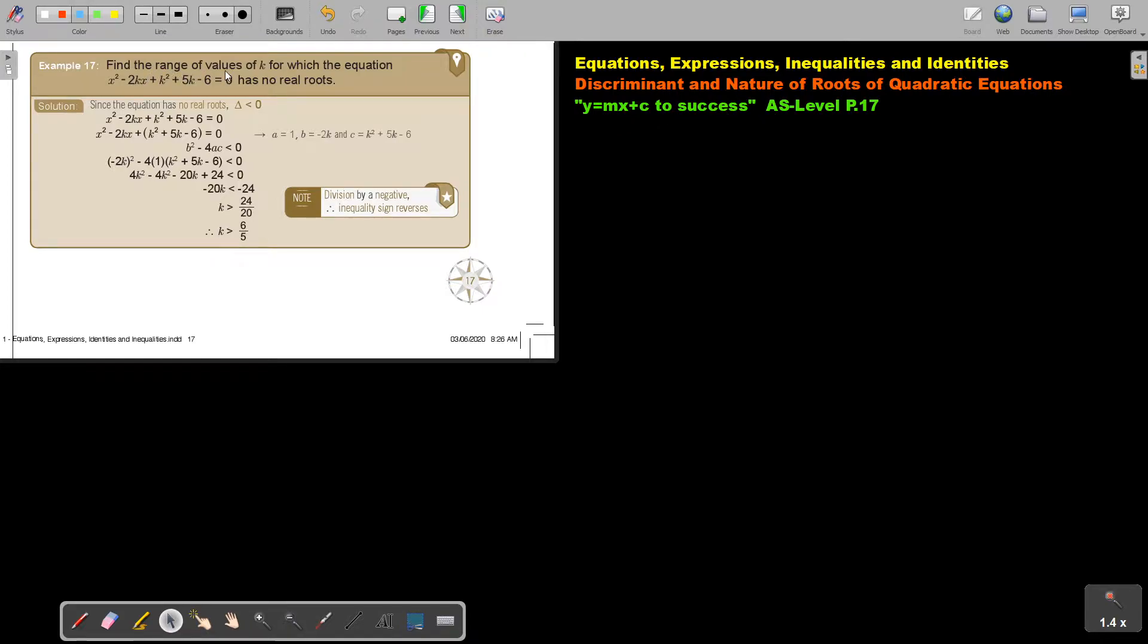Find the range of values of K for which the equation has no real roots. No real roots. So you can already see that the discriminant is going to be smaller than zero.